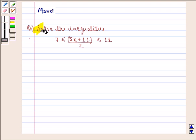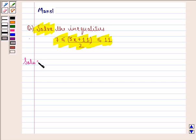So in this question we have to solve the given inequality. Now we start with the solution to this. We are given that 7 ≤ (3x + 11)/2 ≤ 11.